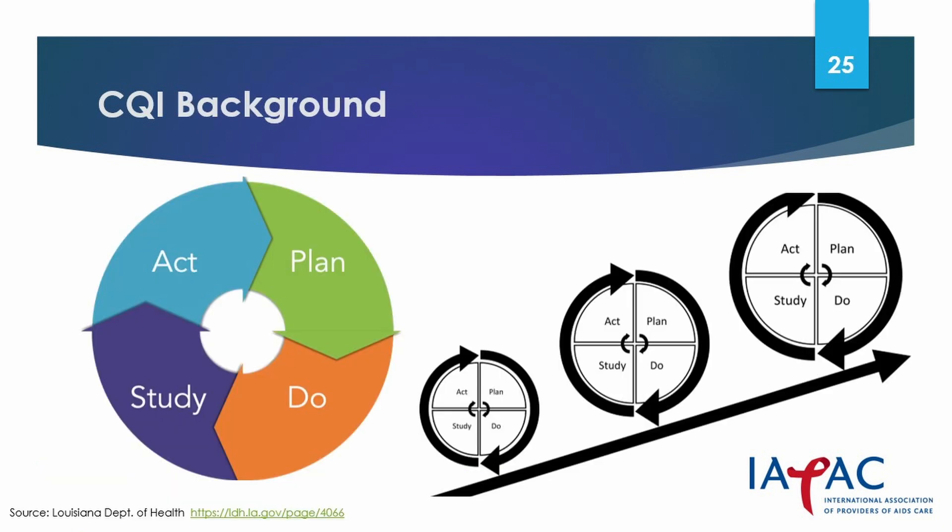HIV-related stigma in health settings undermines efforts to control the HIV epidemic by compromising access to services. Quality improvement uses Plan, Do, Study, Act — or PDSA — cycles in a structured approach to identifying, achieving, testing and adopting interventions to reduce stigma and discrimination. The PDSA cycle tests a change by developing a plan to test the change, carrying out the test in the Do phase, observing and learning the consequences in the Study phase, and determining what modifications need to be made in the Act phase.